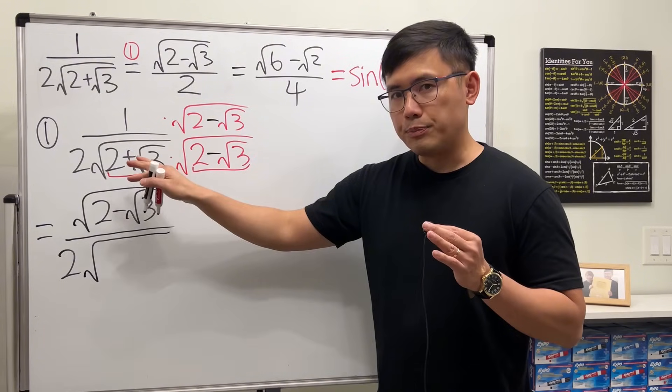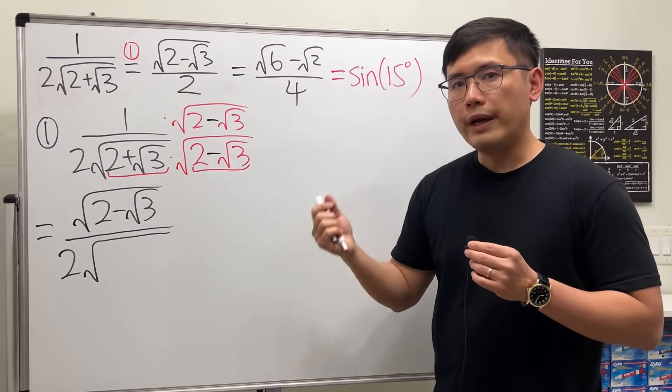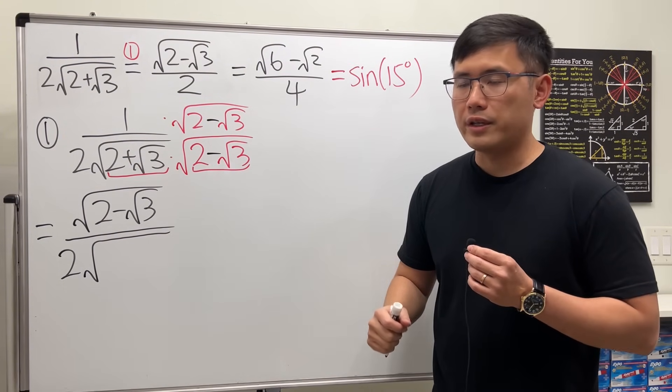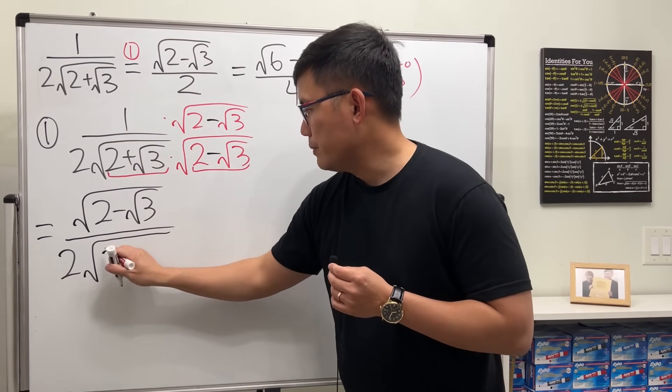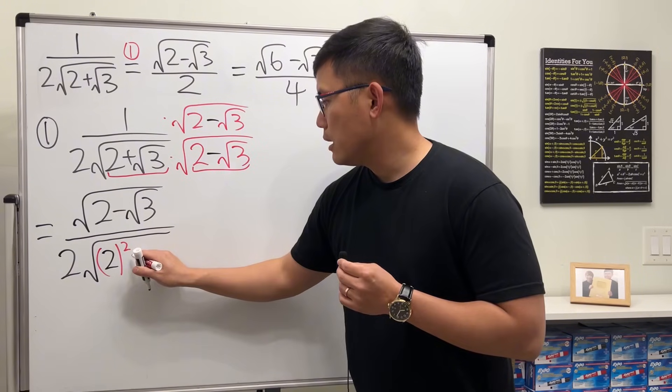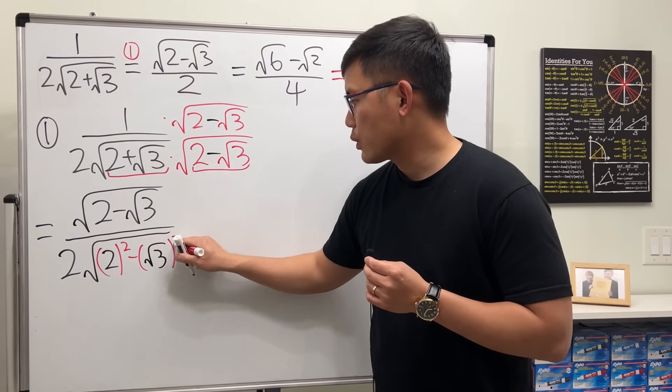But multiplying an expression in terms of a plus b and a minus b will end up a squared minus b squared. So we just have to do the first term, which is 2. Square that. Minus the second term, which is square root of 3. And square that.